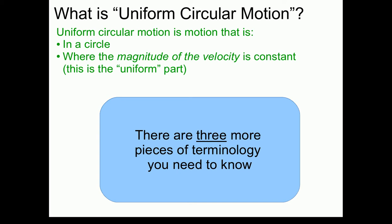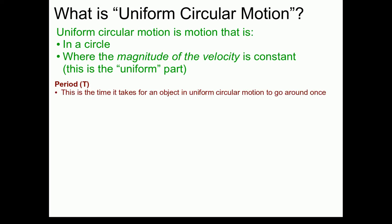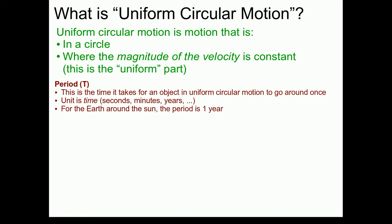Beyond the definition of Uniform Circular Motion, there are three more pieces of terminology you're going to need to know. The first is period, which we often represent with the letter T. Period is the time it takes for an object in Uniform Circular Motion to go around once. It has the units of time. For example, the period of the Earth going around the Sun is one year.